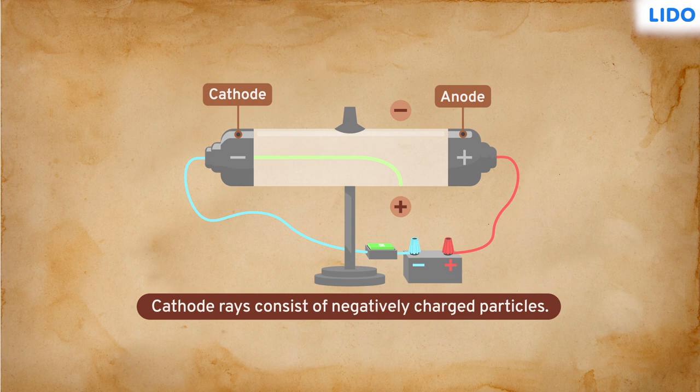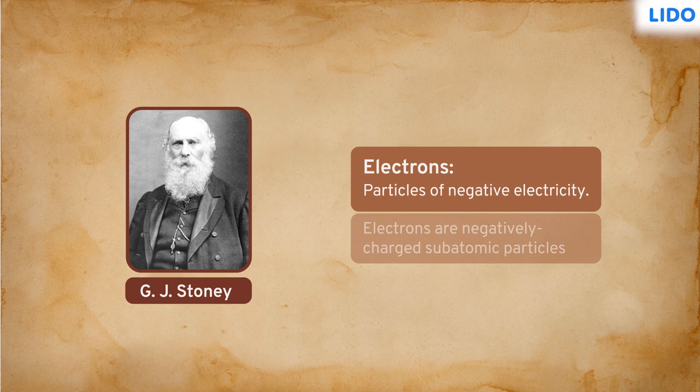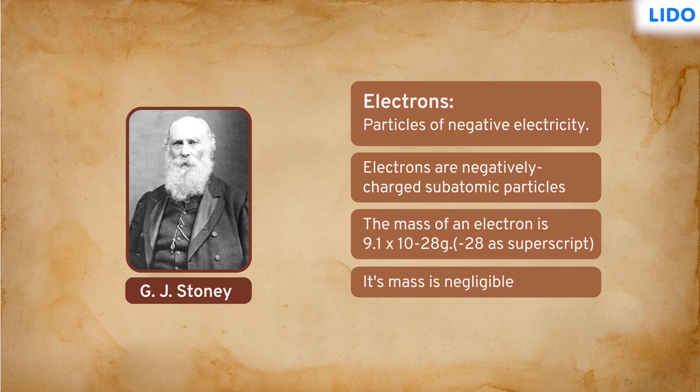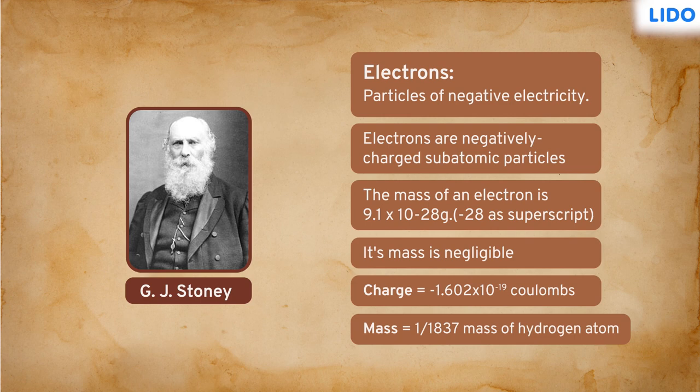These negatively charged particles were later called electrons by G.J. Stoney. And that's how electrons were discovered. It was later found that electrons have a unit negative charge of magnitude minus 1.602 multiplied by 10 raised to minus 19 coulombs, whereas the mass of one electron was equal to 1 over 1837 of the hydrogen atom.